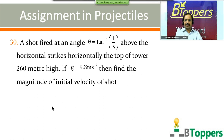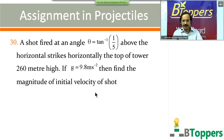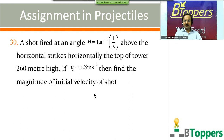Question number 30: a shot is fired at an angle theta = tan⁻¹(1/5) above the horizontal and strikes a horizontal plane at the top of a tower 260 meters high, g = 9.8 m/s². Find the magnitude of the initial velocity of the shot. Try these questions — in my next class I will be showing the answers for all of these questions.